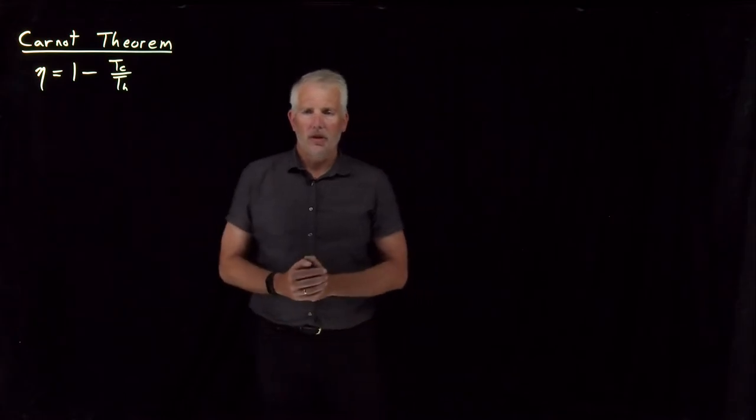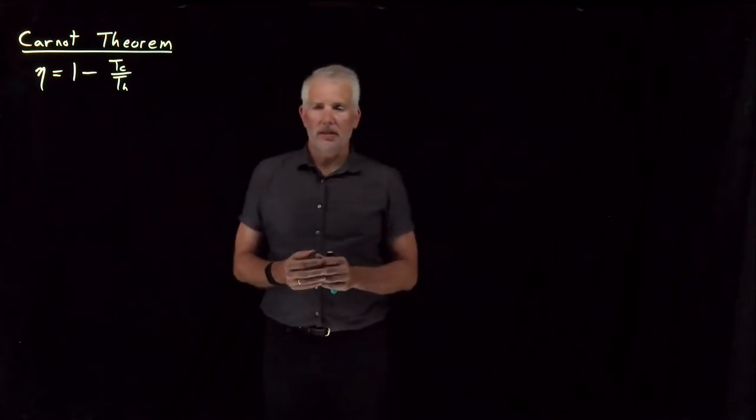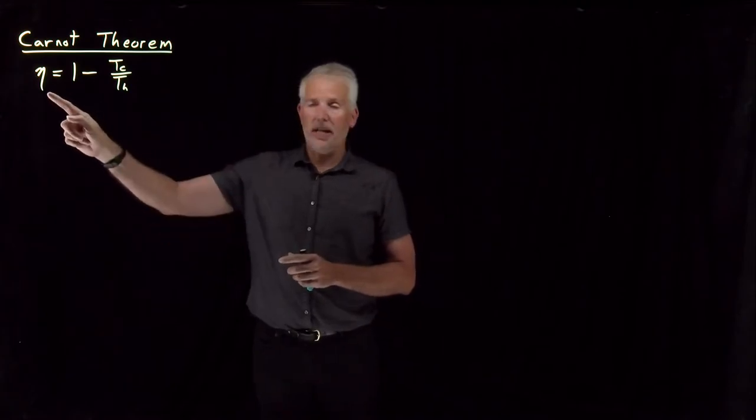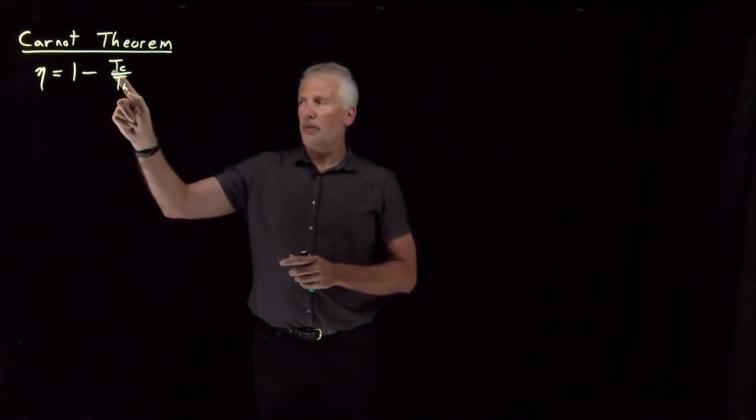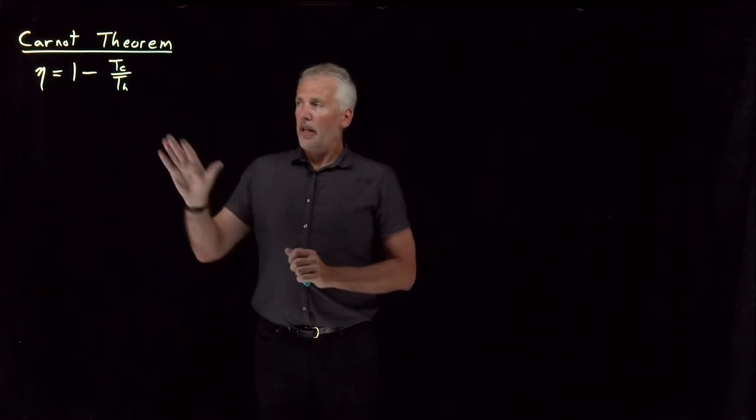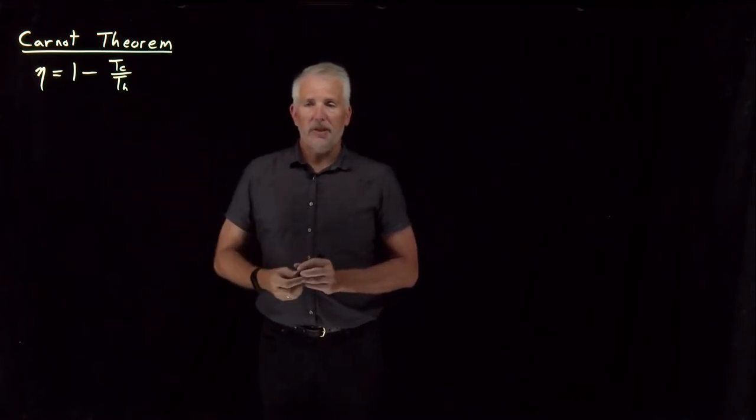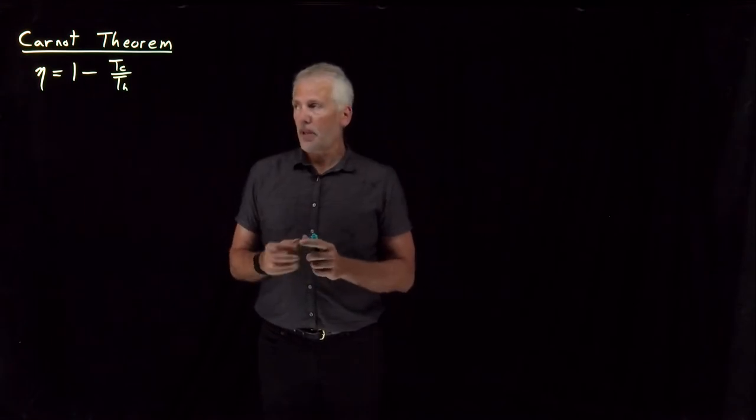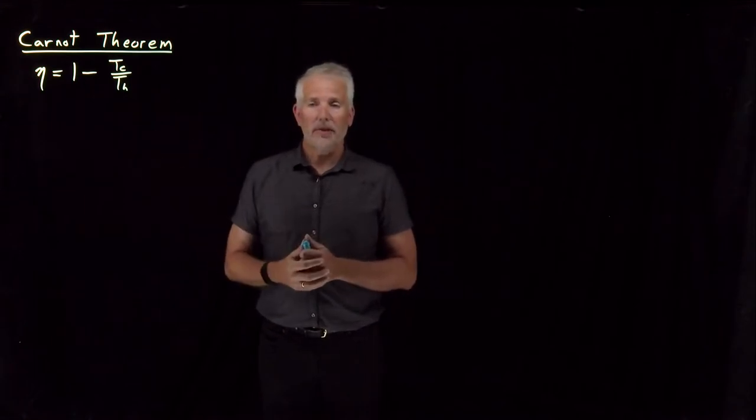Okay, so what we've seen so far about the Carnot cycle is that if we run a Carnot cycle for an ideal gas, we get a heat engine with an efficiency that's one minus this ratio of the cold temperature, the cold reservoir, to the hot temperature, the temperature of the hot reservoir. That's not just specific to the Carnot cycle for ideal gases, as it turns out, but for lots of other types of heat engines as well.